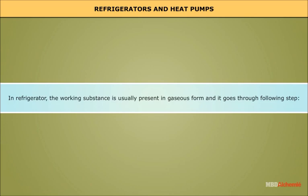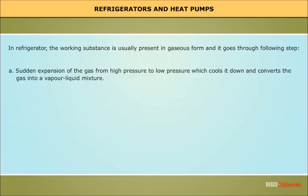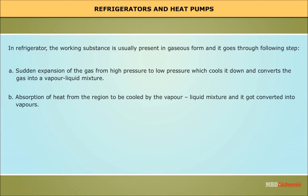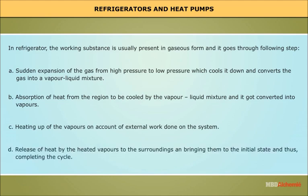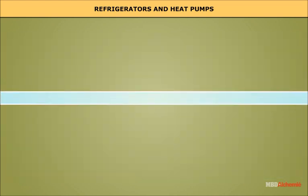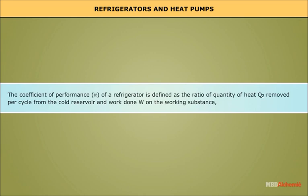In a refrigerator, the working substance is usually present in gaseous form and goes through the following steps: (a) sudden expansion of the gas from high pressure to low pressure, which cools it down and converts it into a vapor-liquid mixture; (b) absorption of heat from the region to be cooled by the vapor-liquid mixture, converting it into vapors; (c) heating up of the vapors due to external work done on the system; (d) release of heat by the heated vapors to the surroundings, returning to the initial state and completing the cycle.